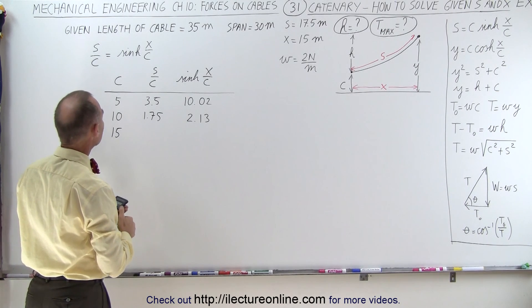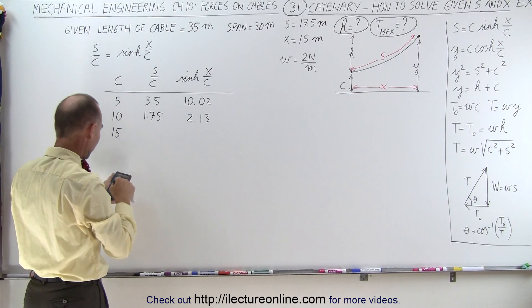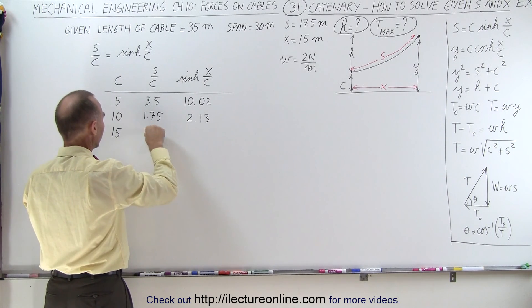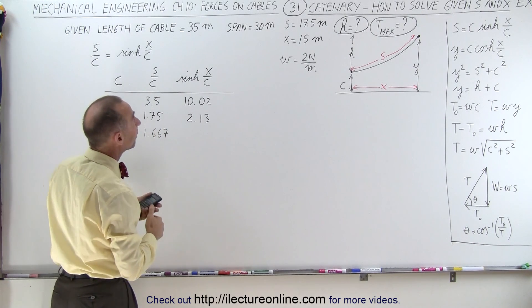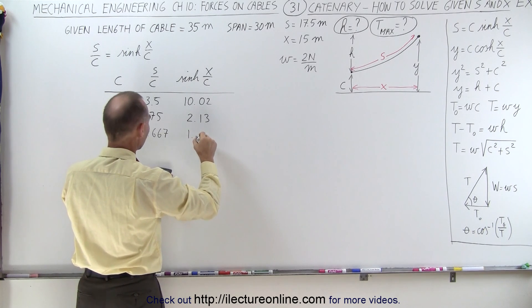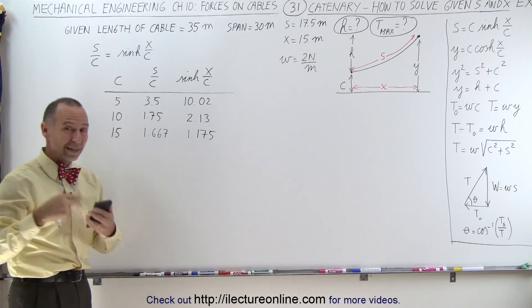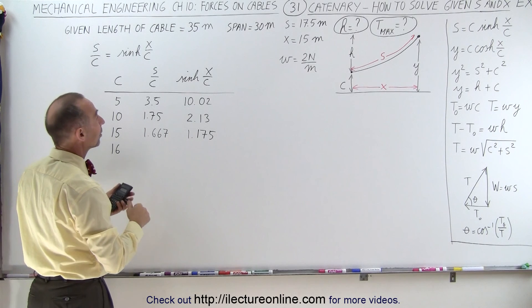Let's try 15. That means S divided by 15, that's 17.5, we get 1.667. And we have X, which is 15 divided by 15, we get 1.175. Notice it's still bigger than this, so we'll keep going, but not by as much.